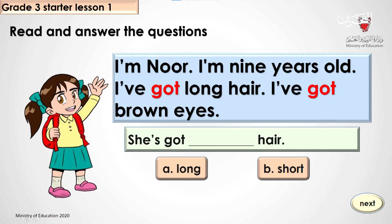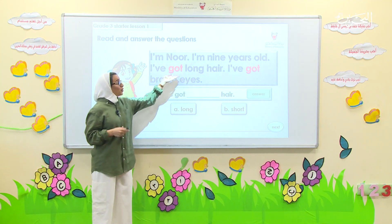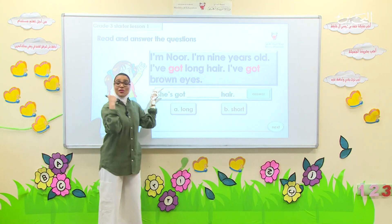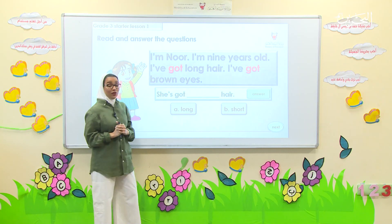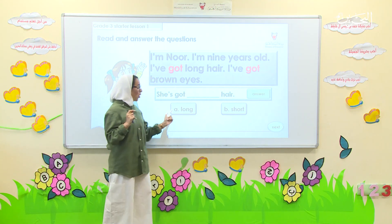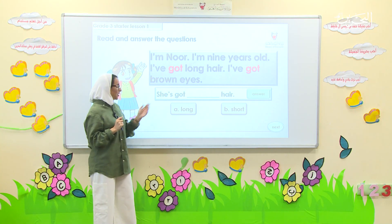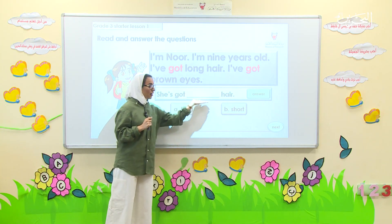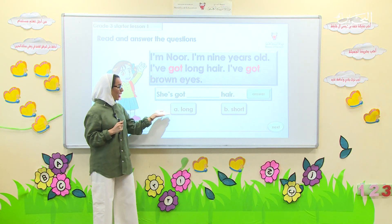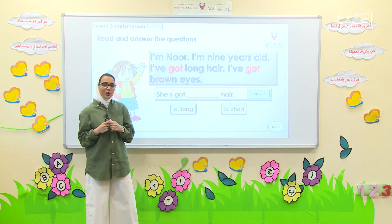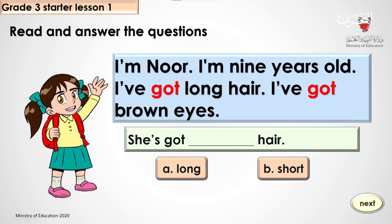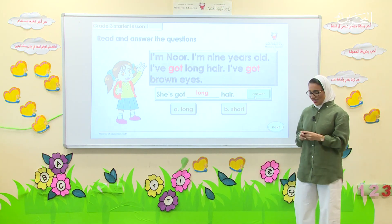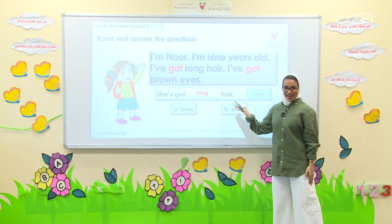Take out your mini boards and answer in them. I'm Noor, I'm nine years old, I've got long hair, I've got brown eyes. Now we need to fill in the blanks. Use your mini boards and you have one minute to choose one of these answers. She's got blank hair — which one is correct? A: long, or B: short. Write on your mini boards. Show me your mini boards. Very good! Good answers everyone — she's got long hair. Well done!